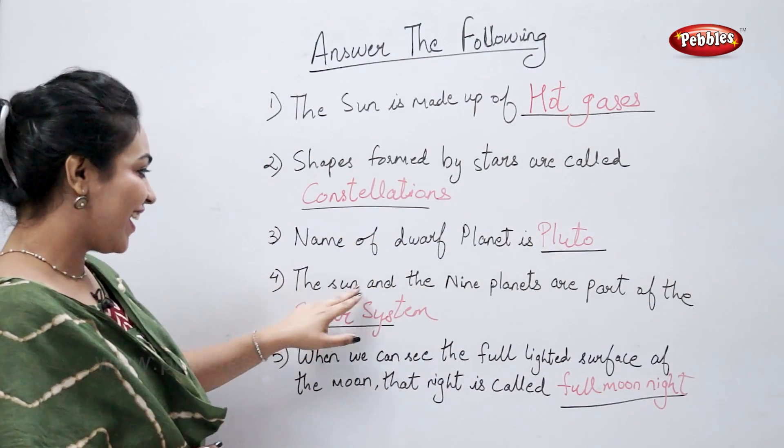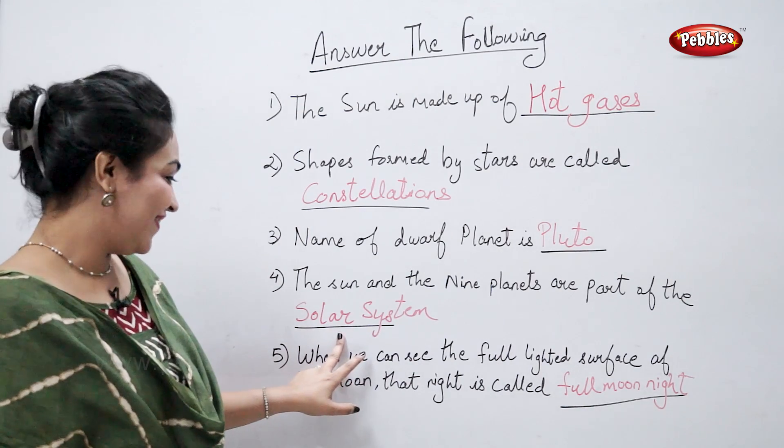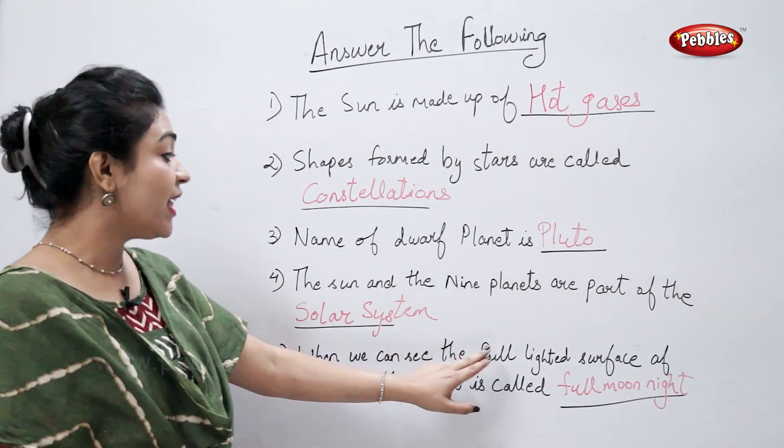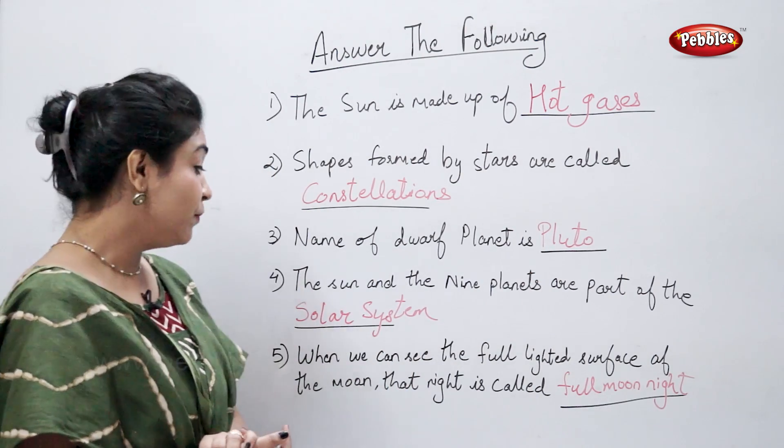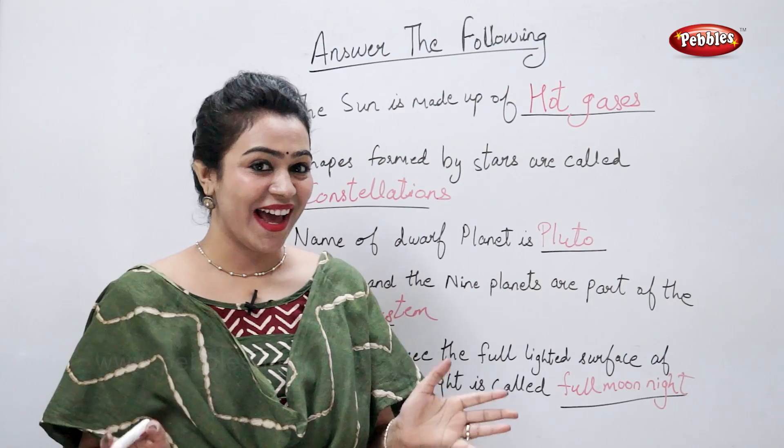The sun and the nine planets are part of the solar system. When we can see the full lighted surface of the moon, that night is called full moon night.